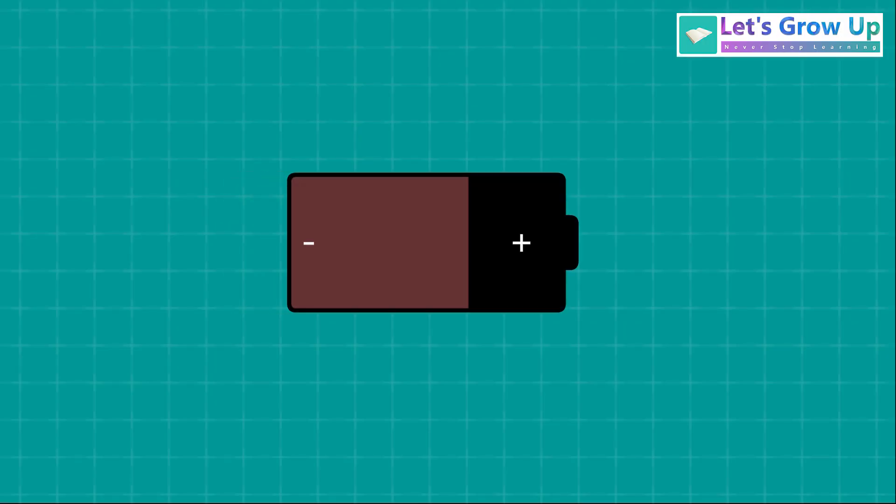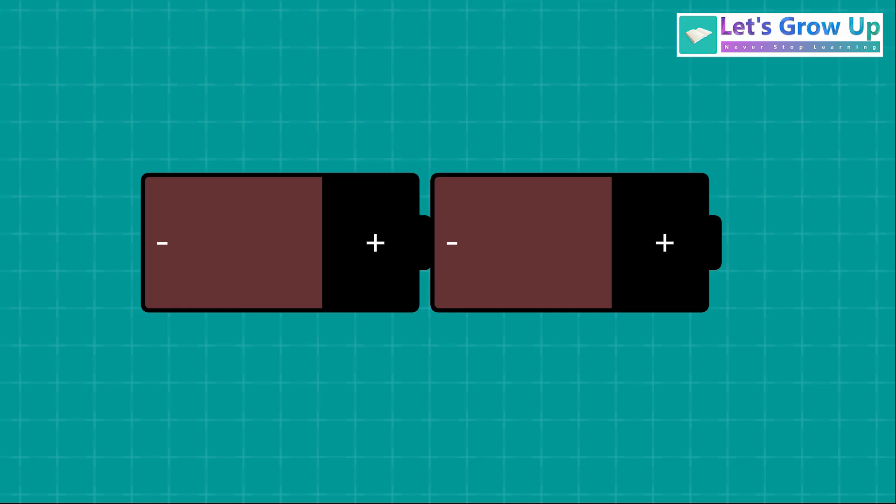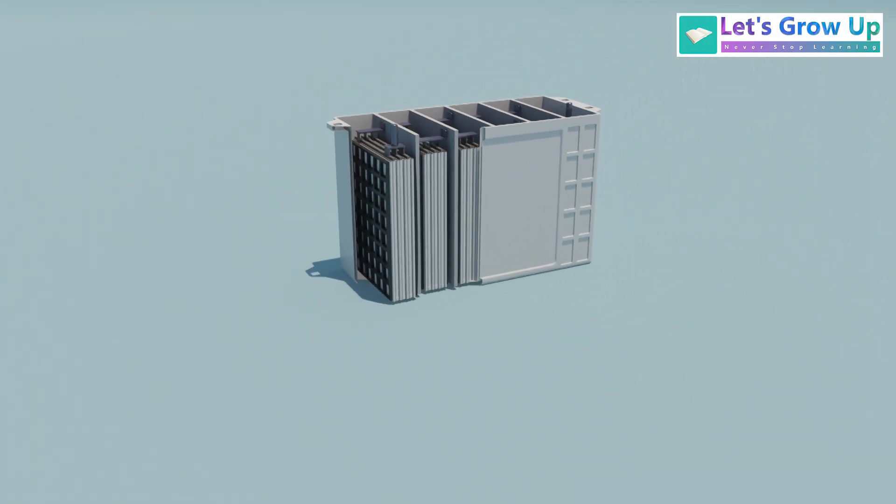Just think, if we arranged two individual 1.5-volt batteries in the same way as the cells inside our battery, then the output voltage would be 3 volts. Let's see the cell arrangement.